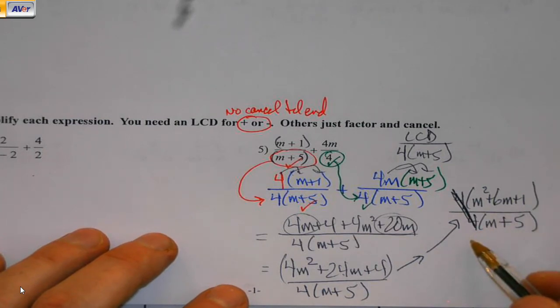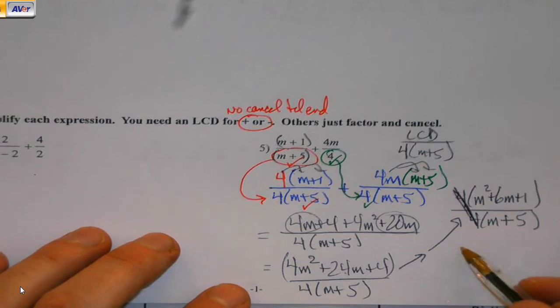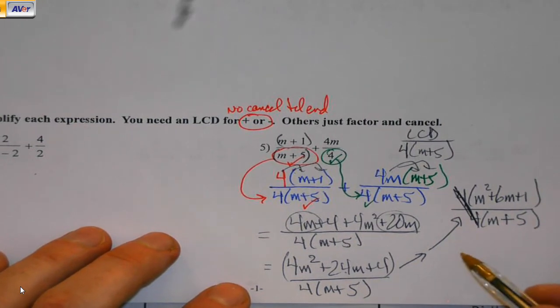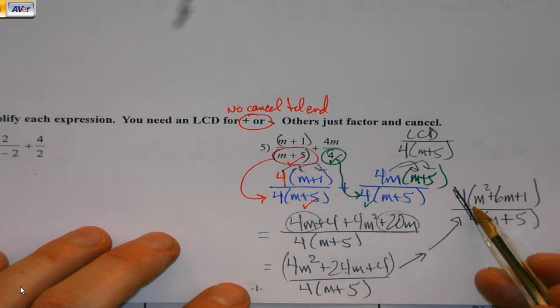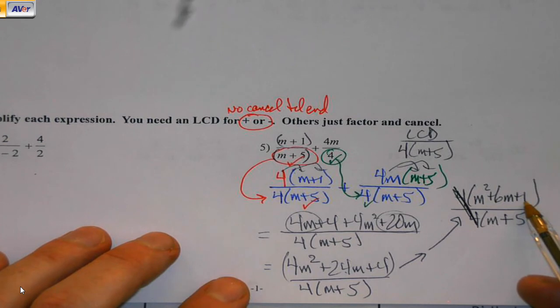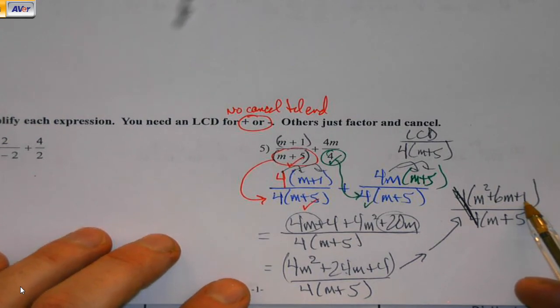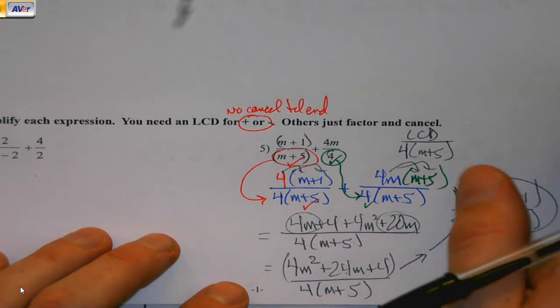I notice they're all divisible by four. So we'll divide that four out. It just comes to the front. Now I notice these fours are out here. They're not bonded with anything. They can cancel. Can I cancel these m's? No, I can't. My multiply number's one. That one's done.